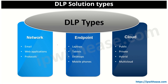DLP solution types represent the three pillars on which DLP works. The first is Network DLP, which is about protecting the network traffic of an organization — especially inspecting packets that are sent and received. This includes emails, web applications, and protocols.